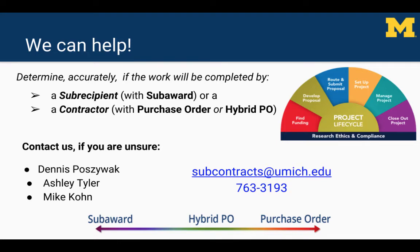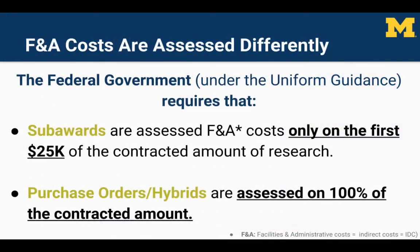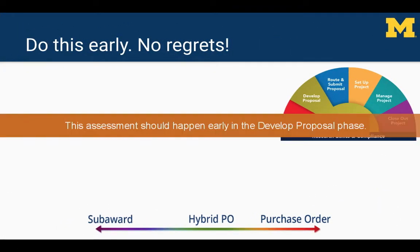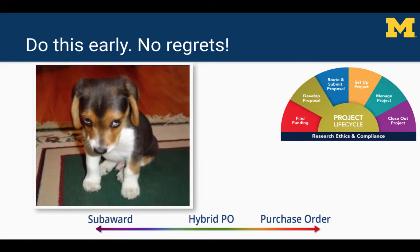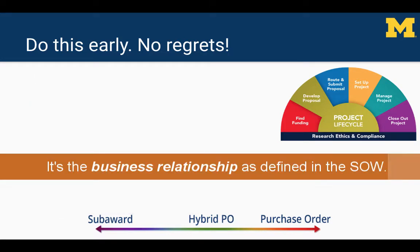The Office of Contract Administration can help a project team determine the proper business relationship if adequate details are provided in the statement of work. Why is this important? Because indirect costs are assessed differently for subawards versus purchase orders and hybrid contracts. Subawards are assessed indirect costs only on the first $25,000 of the subaward amount, whereas when the relationship is that of a contractor, indirect costs are assessed on 100% of the contracted amount. Understanding how to apply the appropriate classification will ensure you request the correct funding amount from the sponsor, so the correct IDC is requested.